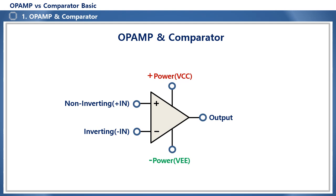In the past, these operational functions were implemented using transistors, but the design was too complex and difficult, so the operational amplifier was created. The op-amp has a large input resistance, small output resistance, and a very large open-loop gain, and is a differential amplifier that amplifies the voltage difference between the plus and minus input terminals.